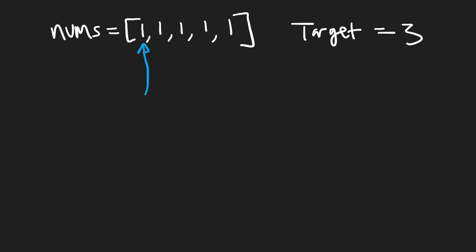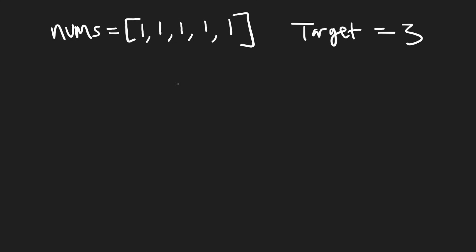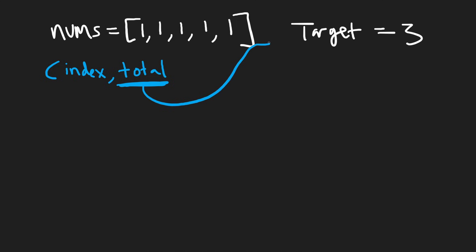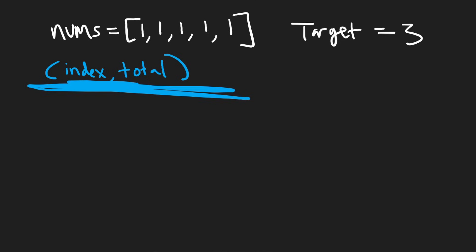Remember, for every single one of the values we have a choice — we can either add it or subtract it. The best way to visualize this is using a decision tree. We want to enumerate all possible totals we could get from this array. Initially we start at index zero and our total will initially be set to zero. We keep track of what index we're at and what our total is so far, because by the time we reach the end of the array, we want to know if our total is equal to the target value. Using this pair of values as our parameters to our recursive function, we'll get a decision tree.